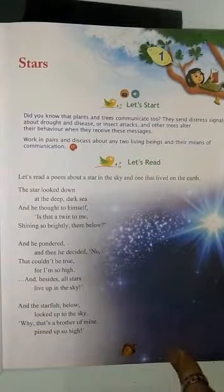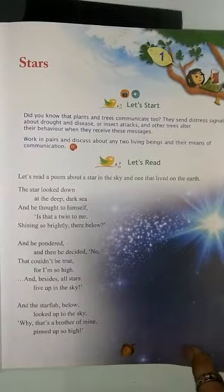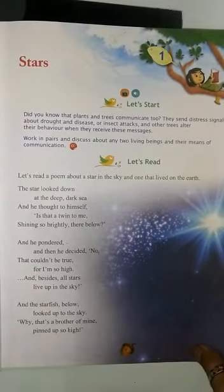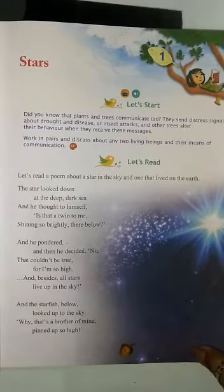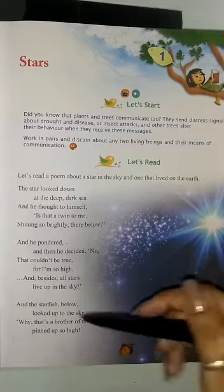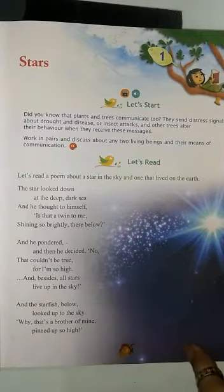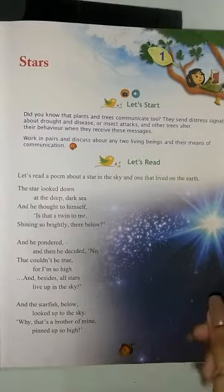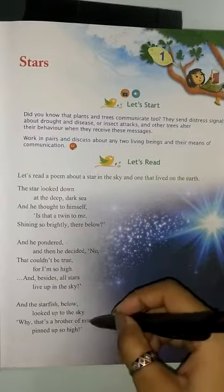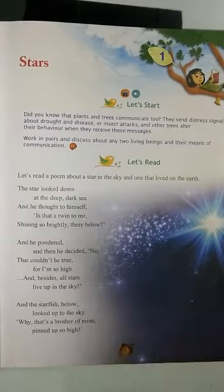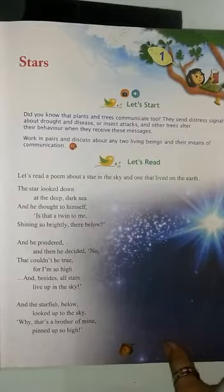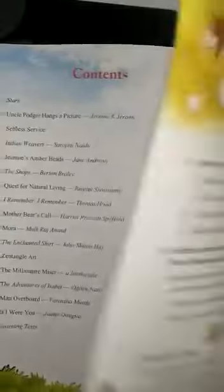And the starfish below — joh starfish niche hai — looked up at the sky. Sky ki oar dekhta hai. That's a brother of mine — kya ye mera koi bhai hai — pinned up so high — joh ki itna oopar hai.